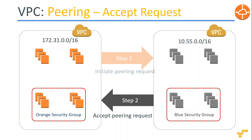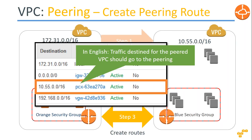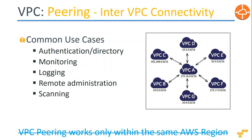Step one is to initiate the request. Step two is to accept it. Step three is configuring your routing tables on both sides — saying that traffic from 172 destined for the 10 series should be sent to the PCX interface. A new peering interface is created and all traffic is sent there. You do the same on the other side: route 172 traffic to the PCX interface. Common use cases include monitoring, logging, remote administration, and security scanning.